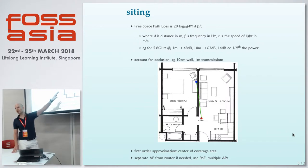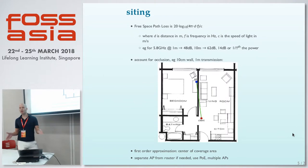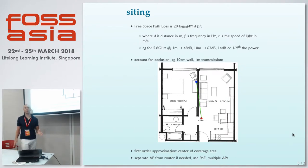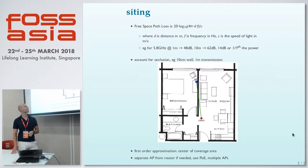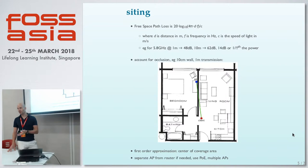One key reason distance matters is that the further you get from your access point, you receive a fraction of the energy from your clients and access points. This also applies to frequencies — a 5GHz access point provides half the actual energy for a given distance compared to a 2GHz radio. So you must take into account that you get weaker signals as you go higher in frequency.